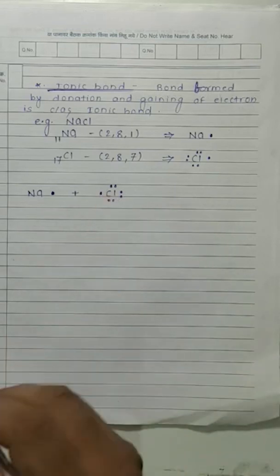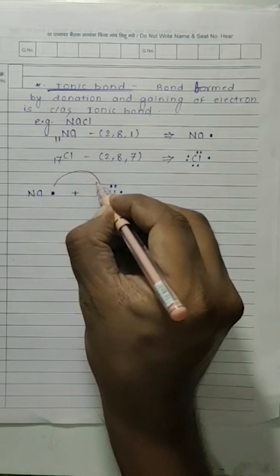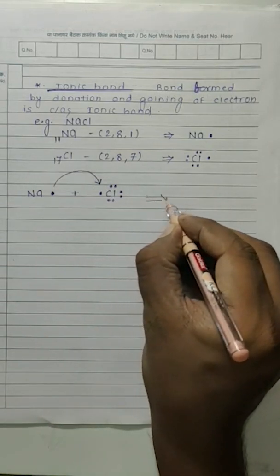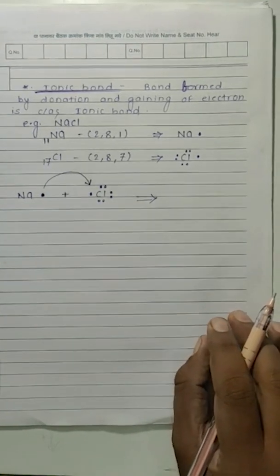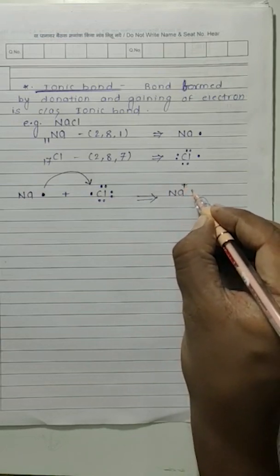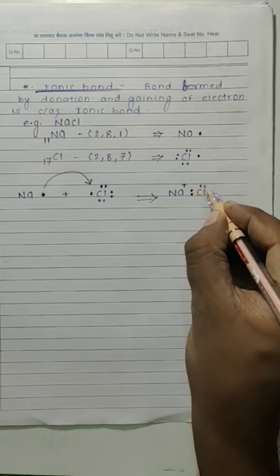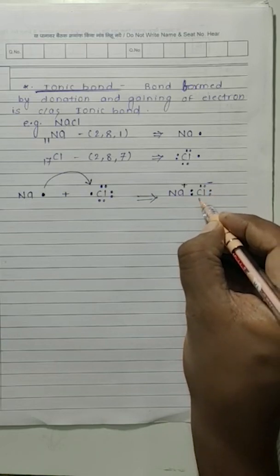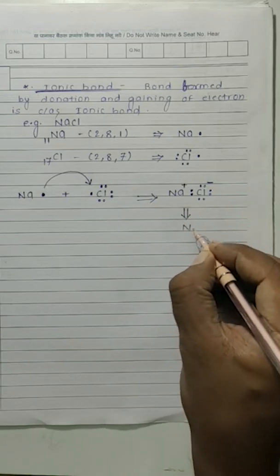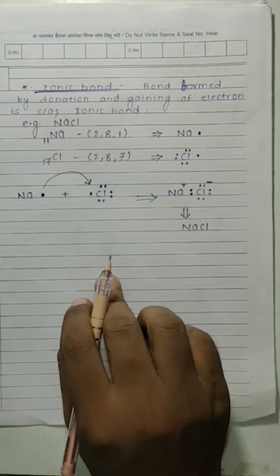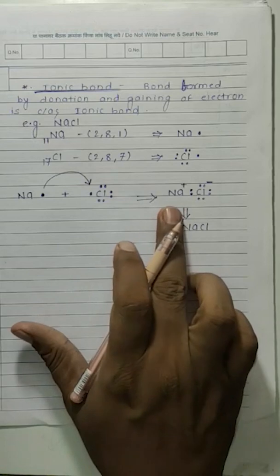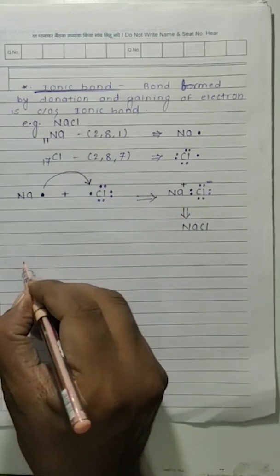To attain stability, sodium will donate its one electron and chlorine will gain one electron. As soon as sodium donates its one electron, sodium becomes Na⁺. And chlorine, having gained one electron, becomes Cl⁻. So Na⁺ and Cl⁻ — this is NaCl. Sodium donated, chlorine gained. Bond formed by donation and gaining of electron is called ionic bond.